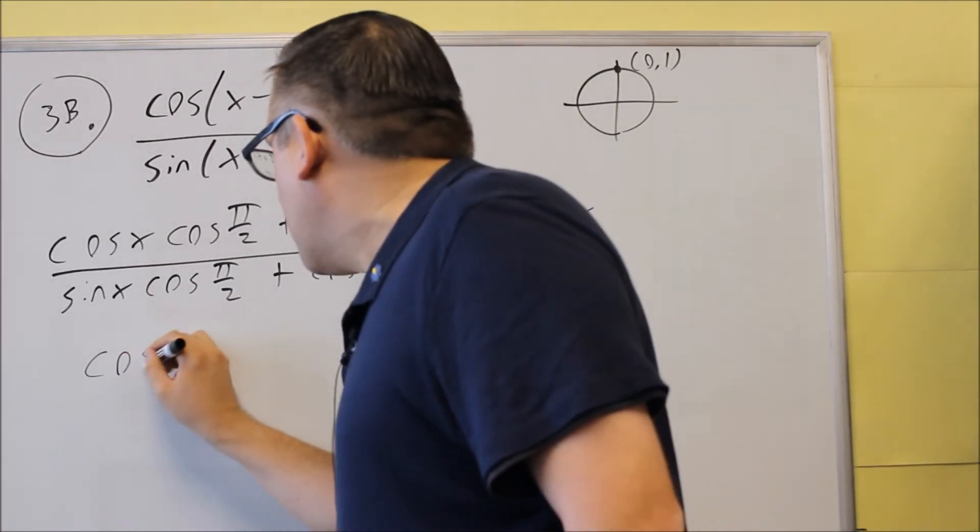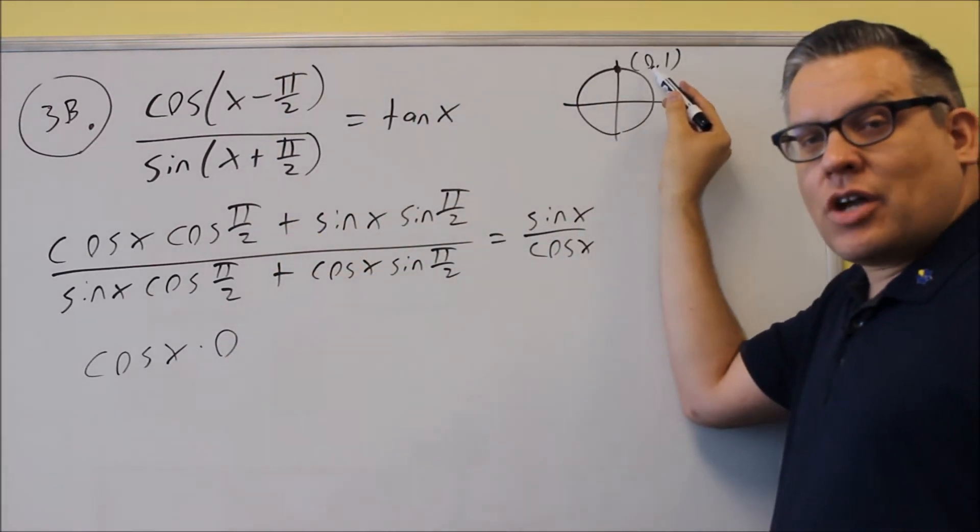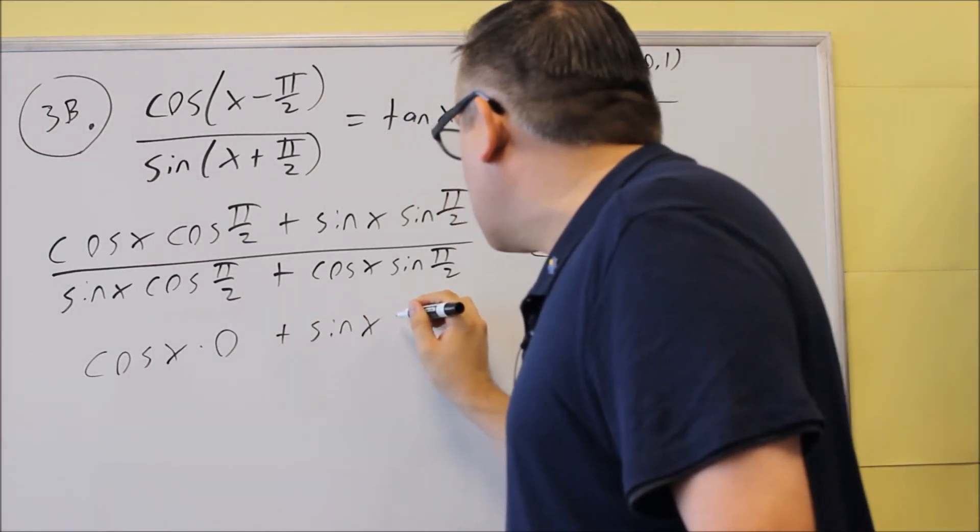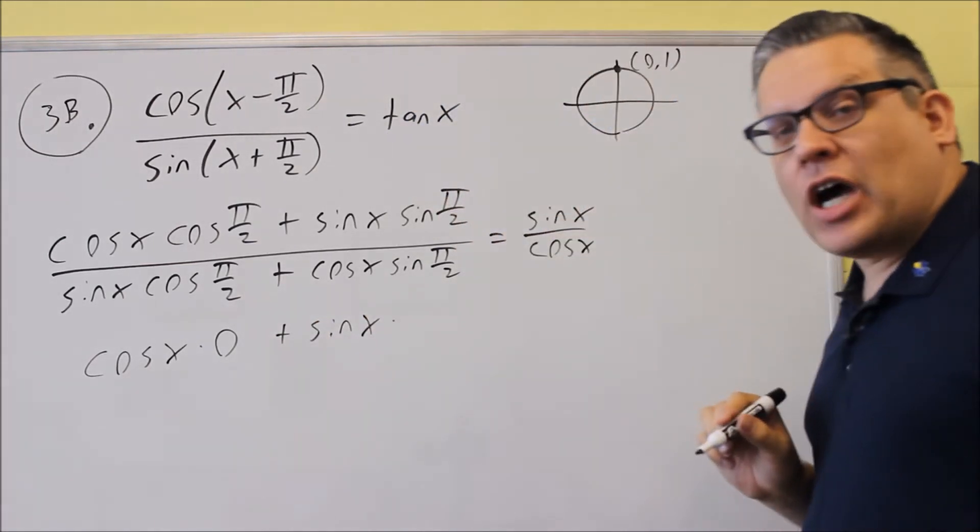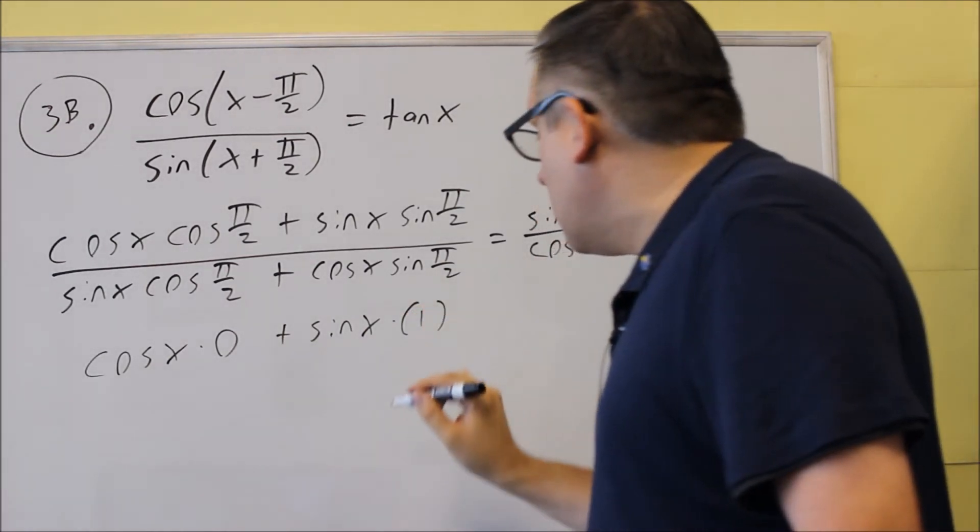We're going to do cosine x, and then we said that cosine pi over 2 is the x value at pi over 2, that's 0. And then I have sine x times sine pi over 2, that's the y value at pi over 2, which is 1.